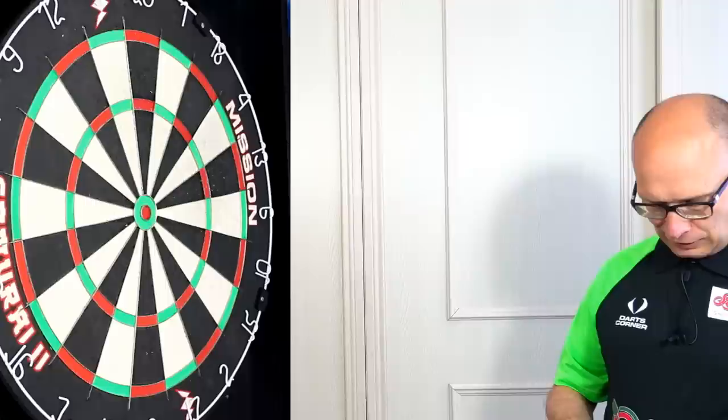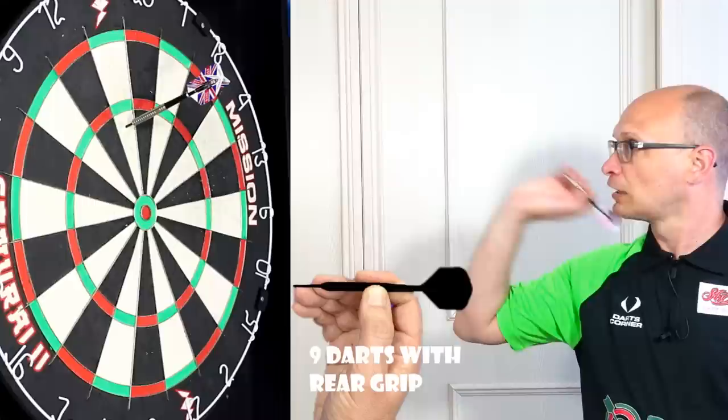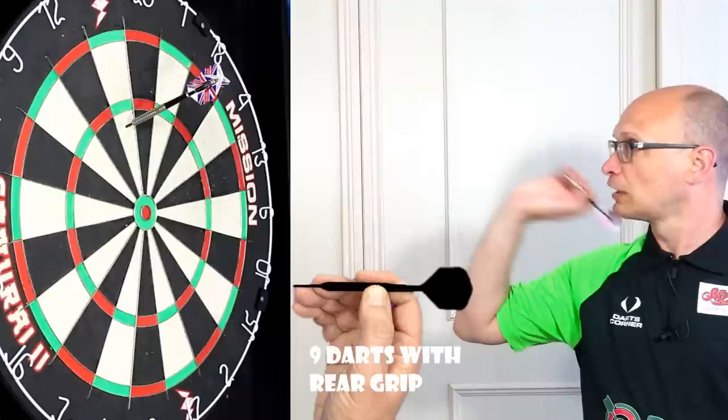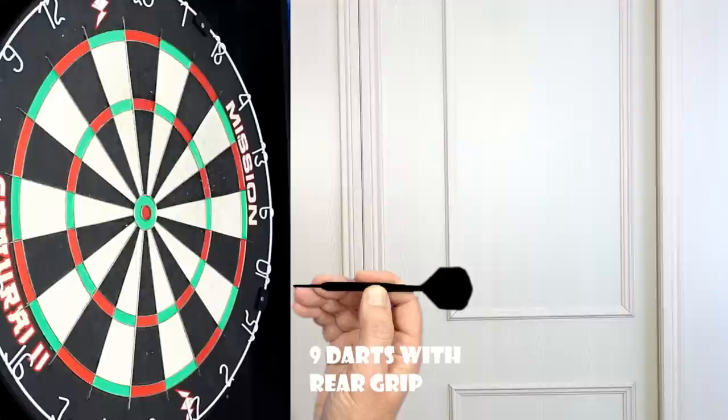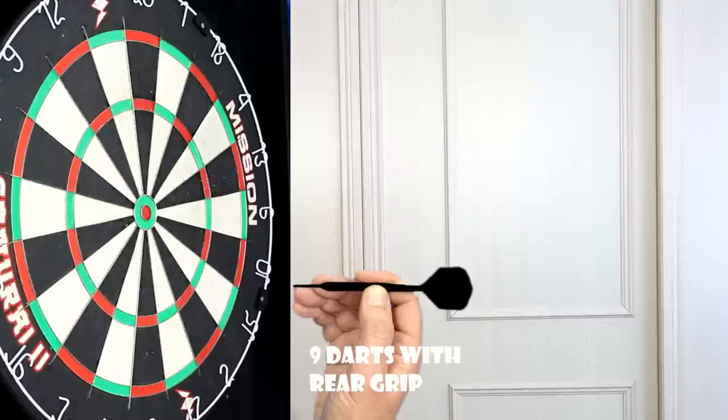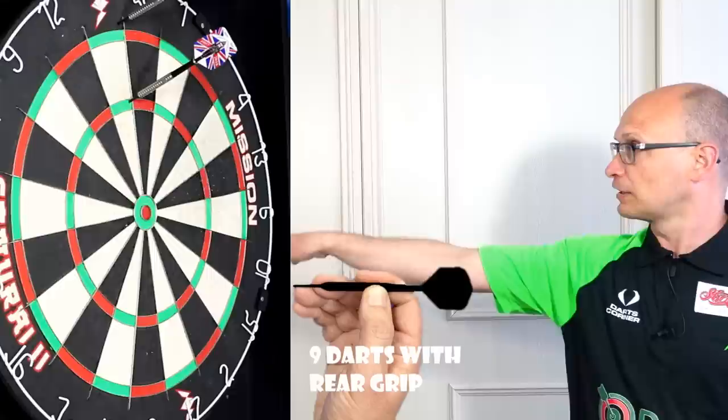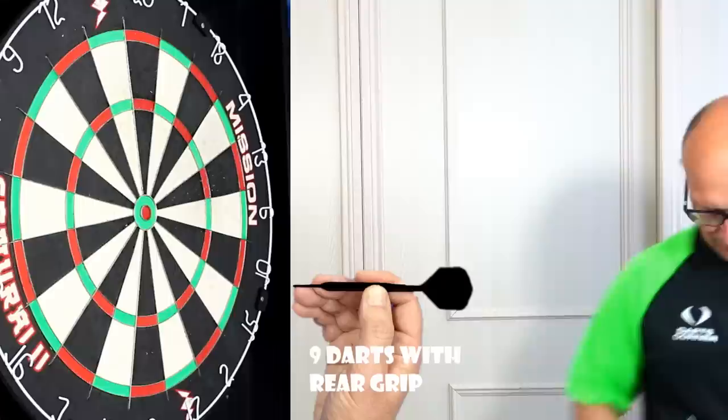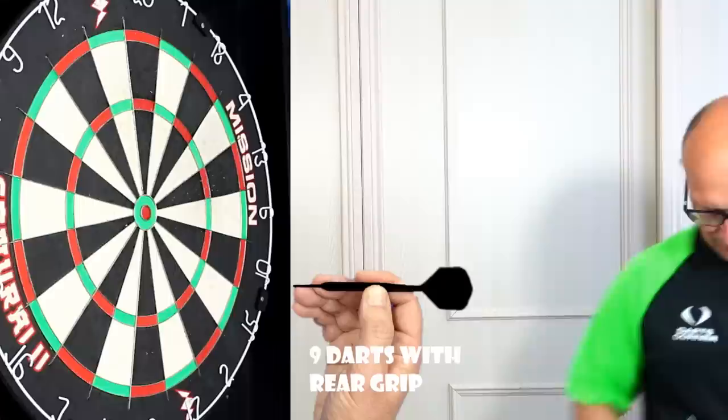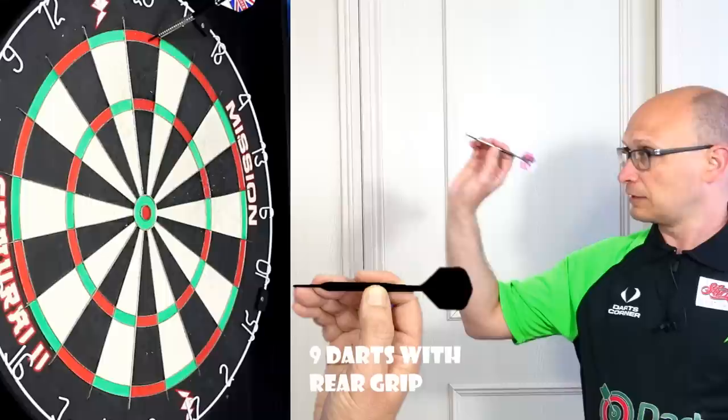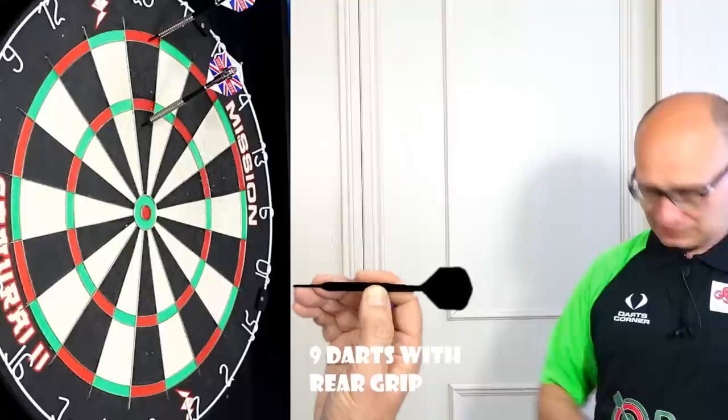So I'll try gripping it right at the end of the barrel. Now as you've seen in the picture of Bristow's grip, he actually grips on the stem but kind of rests his other finger on the barrel and on the point with the other finger. Seems to be kicking up high from the rear though for me.